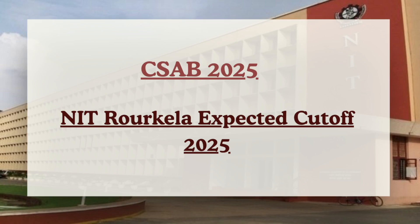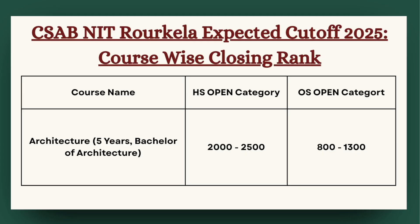First in the list we have Architecture Engineering. For HS open category, the cutoff can be expected between 2,000 to 2,500. Next for OS category, the cutoff can be expected between 800 to 1,300.